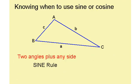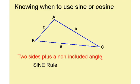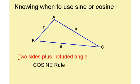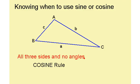We have to know when to use the sine rule and when to use the cosine rule. There are four basic situations. If you try the wrong one, it just won't work and you'll need to use the other one. The four situations are: if you have two angles and any side, use the sine rule. If you have two sides and a non-included angle, use the sine rule. If you have two sides and the included angle, use the cosine rule. If you are given all three sides and no angles, use the cosine rule.